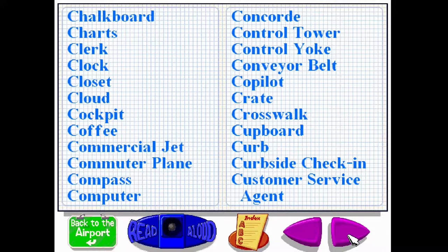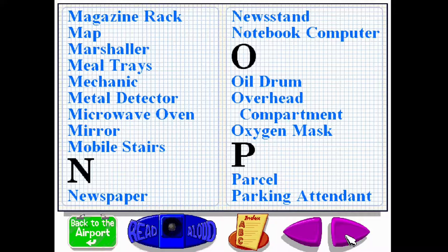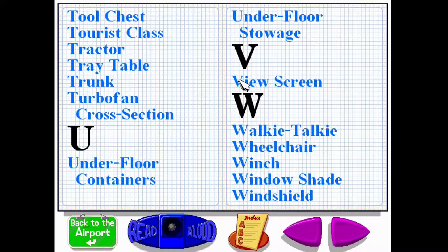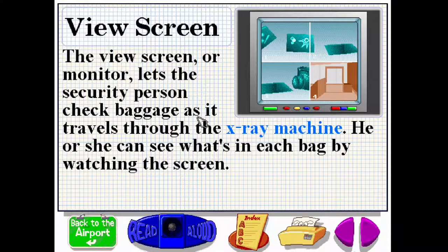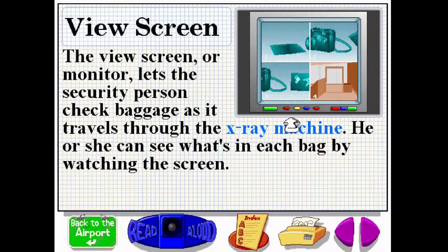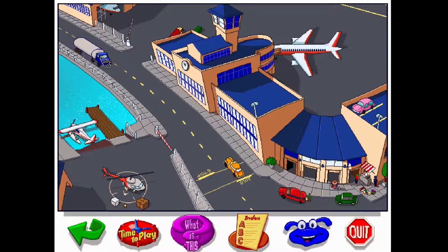I don't know what kind of necessity learning about an airport is, especially a 1995 airport, which is 20-plus years ago. But regardless, if you want to learn about the airport or teach kids about the airport, Buzzy's the place to go. The view screen or monitor lets the security person check baggage as it travels through the x-ray machine — you can see what's in each bag by watching the screen. I didn't really learn anything there, but there's pills, bad pills, lots of pills.